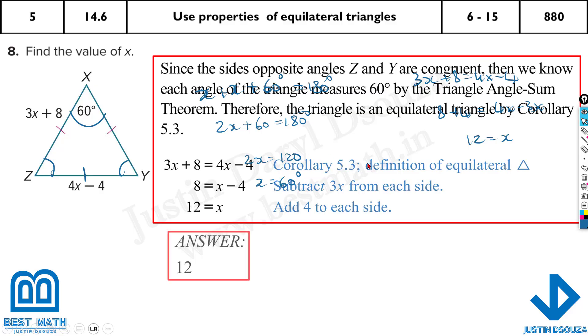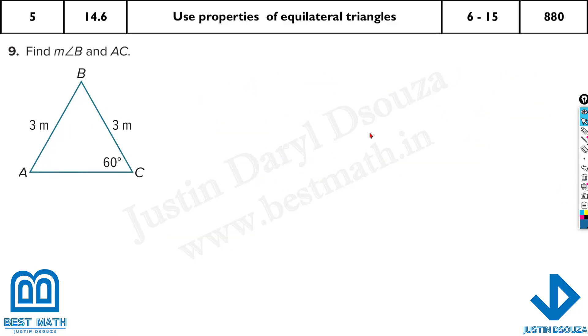And here we go. What about this one? 3, 3. And there is 60. So now here 3, 3. This has to be 60 and 60. And if it's 60 then all are 60. That's it. Measure of angle B is 60 and AC is 3 because it's an equilateral triangle.